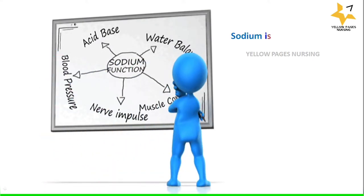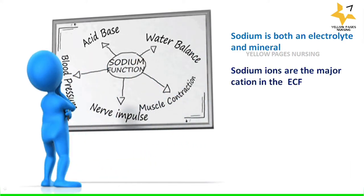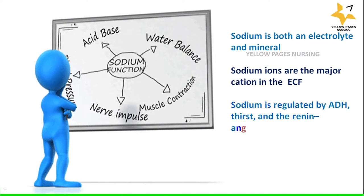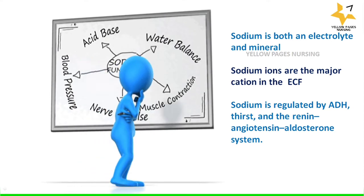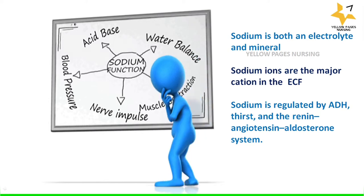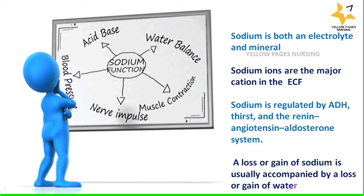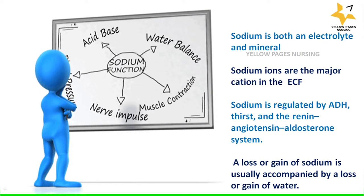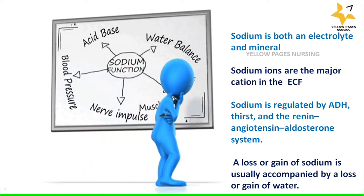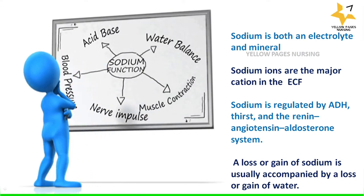Now, what is sodium, where does it come from, and what does it do? Sodium is both an electrolyte and a mineral. It is a major cation in the extracellular fluid. Sodium is generally regulated by antidiuretic hormone, thirst, and the renin-angiotensin-aldosterone system. A loss or gain of sodium is usually accompanied by a loss or gain of water.